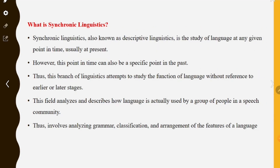What is synchronic linguistics? Synchronic linguistics, also known as descriptive linguistics, is the study of language at any given point in time, usually at present. However, this point in time can also be a specific point in the past — past or present — but one specific time.